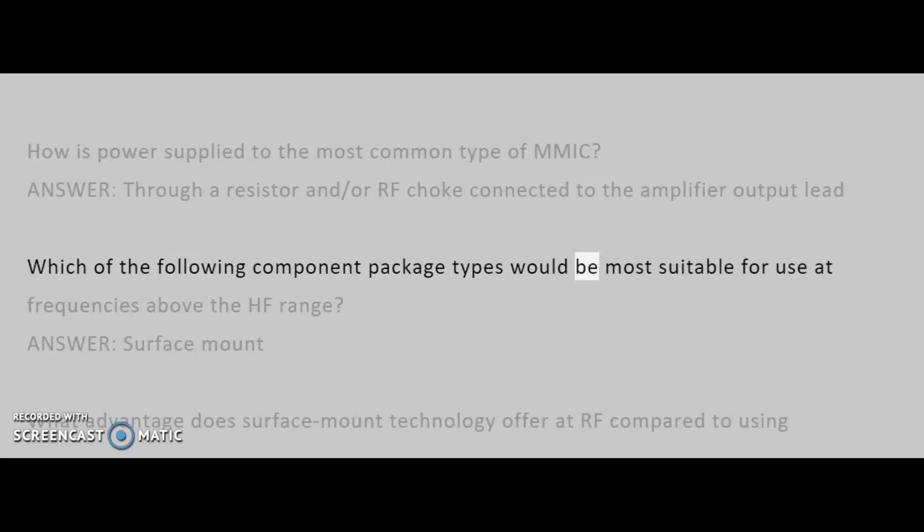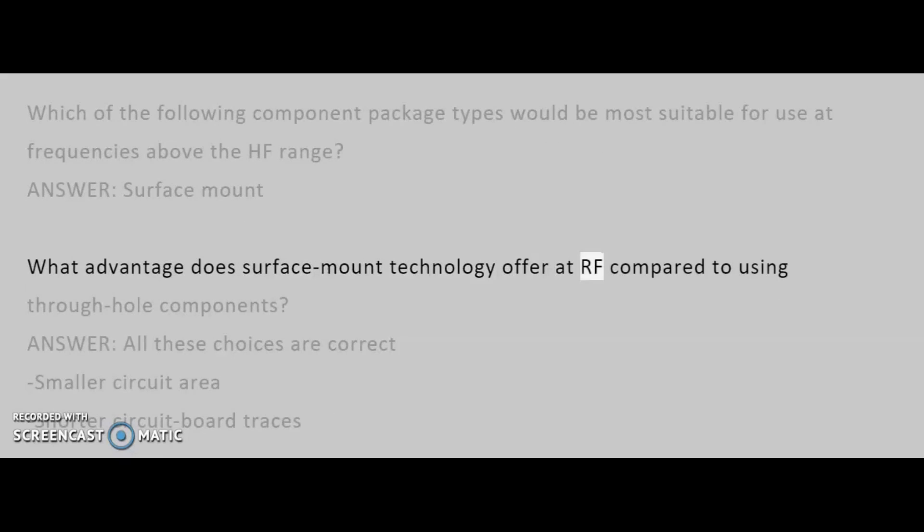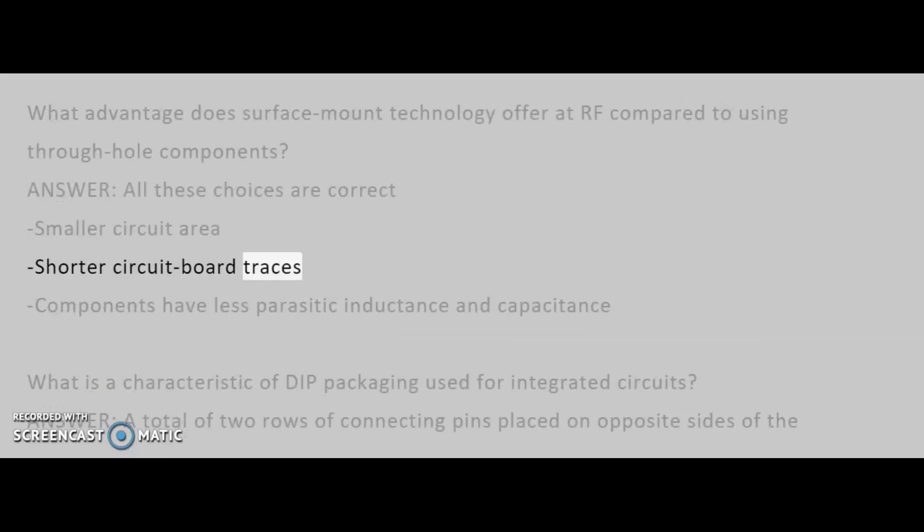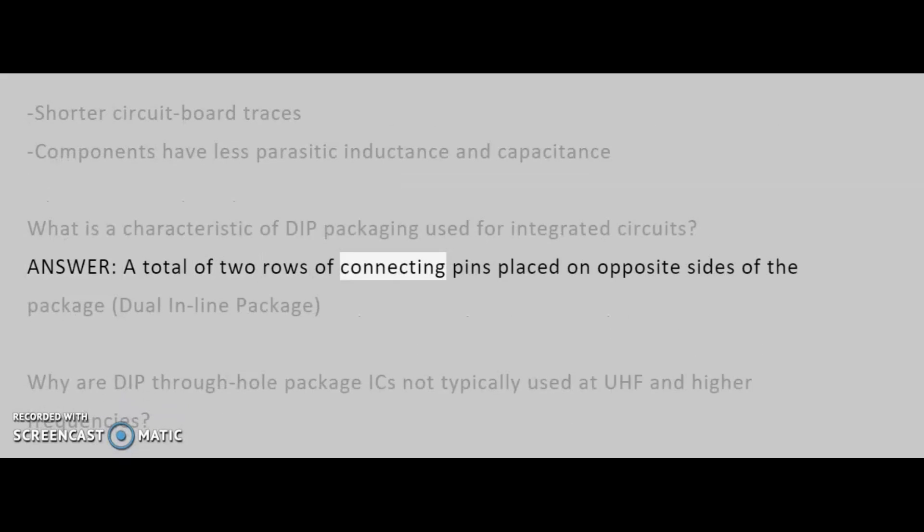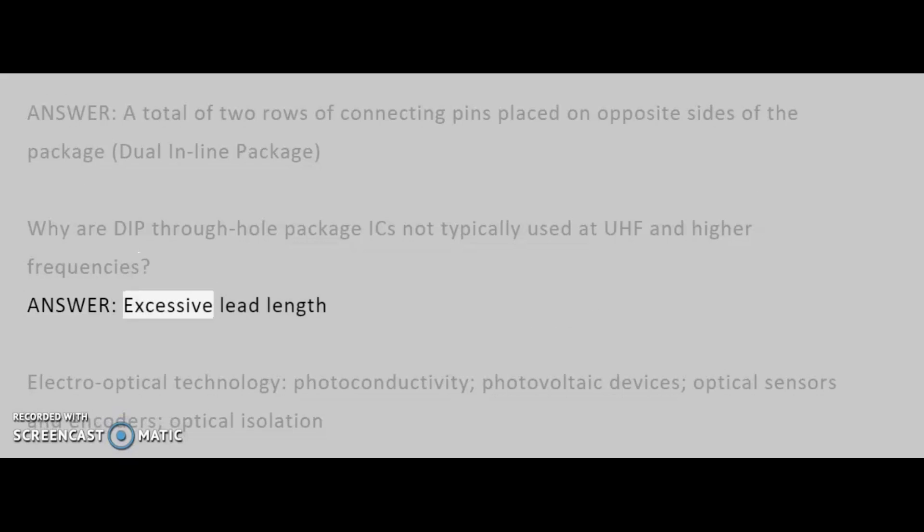Which of the following component package types would be most suitable for use at frequencies above the HF range? Answer: surface mount. What advantage does surface mount technology offer at RF compared to using through-hole components? Answer: all these choices are correct. Smaller circuit area. Shorter circuit board traces. Components have less parasitic inductance and capacitance. What is a characteristic of DIP packaging used for integrated circuits? Answer: a total of two rows of connecting pins placed on opposite sides of the package, dual in-line package. Why are DIP through-hole package ICs not typically used at UHF and higher frequencies? Answer: excessive lead length.